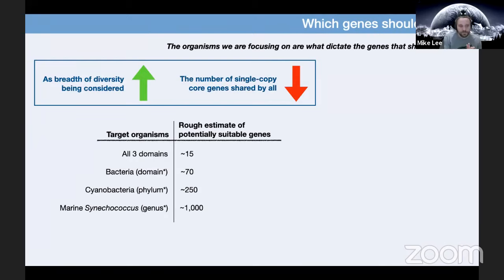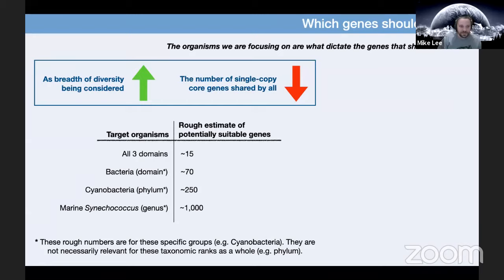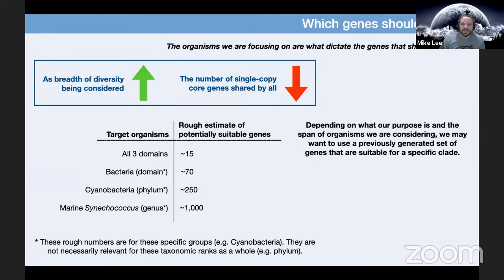Narrowing even further, if looking at one part of a genus — like just the marine Synechococcus, a type of cyanobacteria — there might be as many as 1,000 genes useful for this, out of around 2,500 to 3,000 total genes. So as we narrow our focus, we can really increase resolution. It's worth noting these rough numbers are specific to that taxa, not necessarily the taxonomic rank. A different phylum will have a totally different case because microbial diversity is so remarkable. Depending on the span of organisms we're considering, we might just want to use a previously generated set of genes that are suitable for that clade.